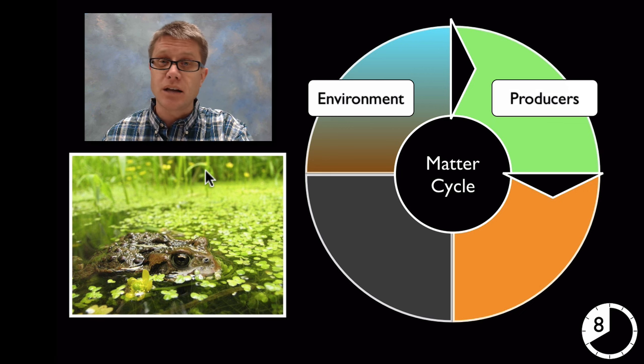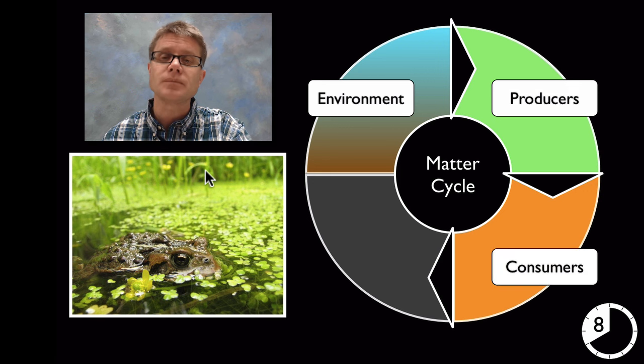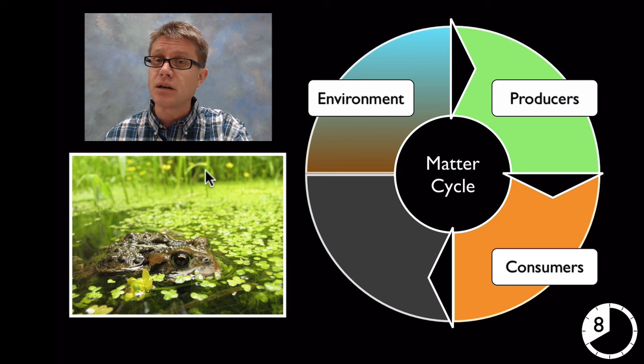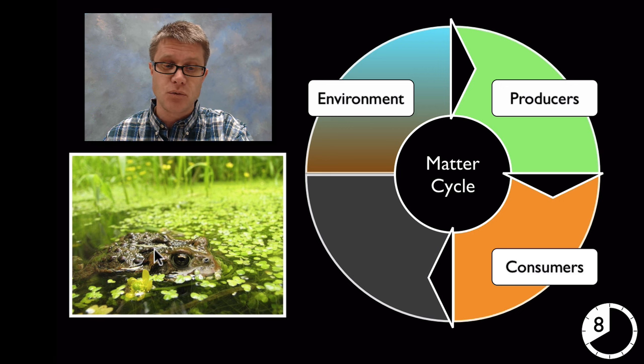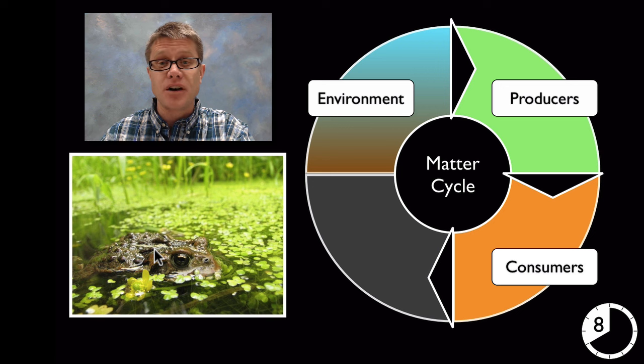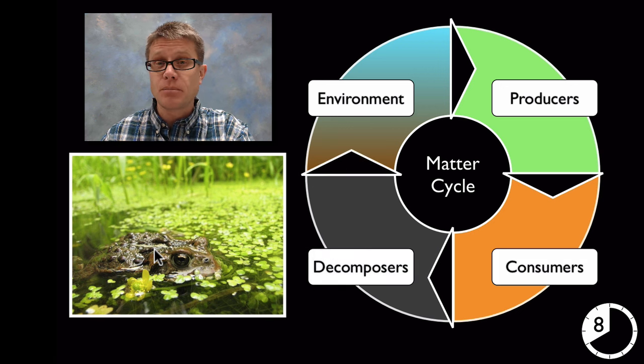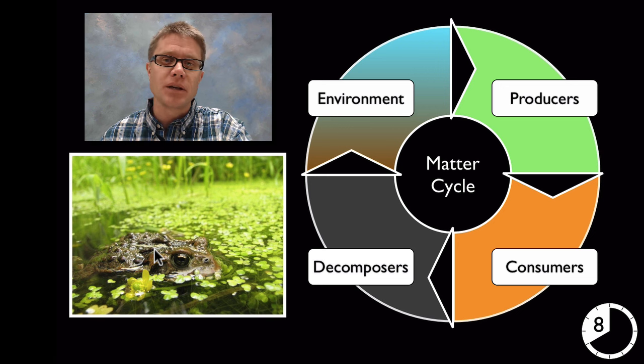Where could the matter go next? Well it could be eaten by an insect. And so now it moves the matter from a producer to a consumer. And maybe that insect in turn is eaten by another consumer, like this frog that is waiting here for a tasty meal. Now the matter flows into the frog. But when the frog dies or it leaves waste behind, that matter can be decomposed and can be returned to the environment again.